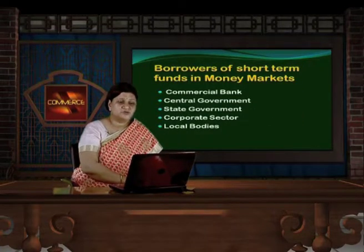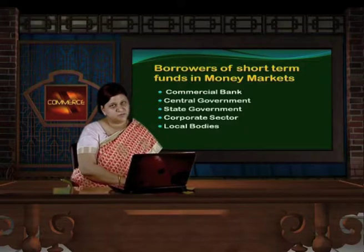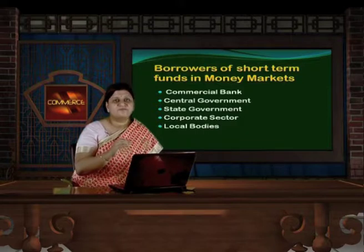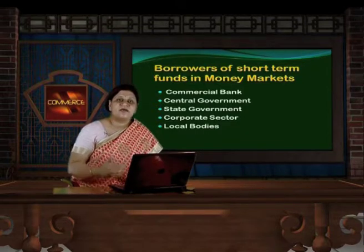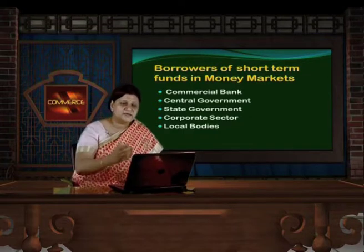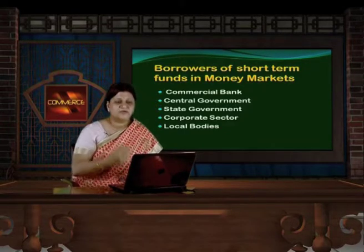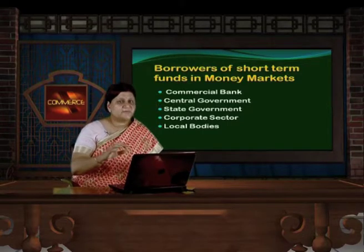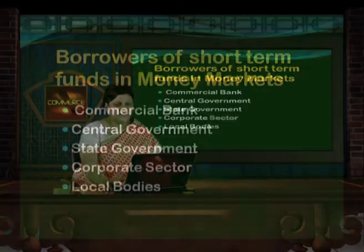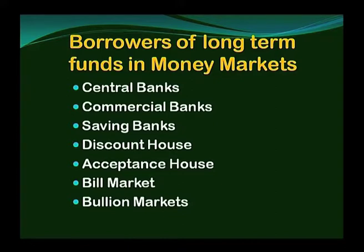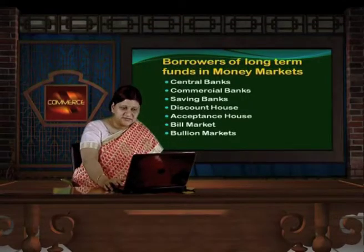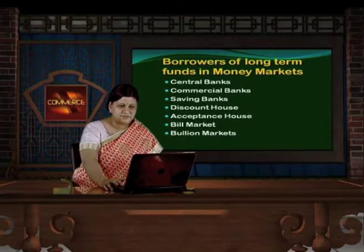Borrowers of short-term funds in the money market can be commercial banks, central government, state government, corporate sectors, and local bodies. For meeting CRR and SLR ratios, there can be a need for short-term funds, so the governmental sector is a key borrower. For funds up to one year, borrowers can include central bank, commercial bank, savings banks, discount houses, acceptance houses, bill markets, and bullion markets — terminologies which will be learned in detail in this lecture.